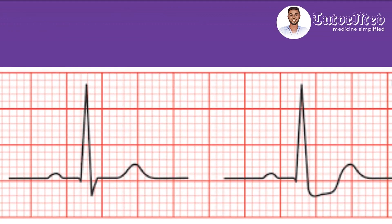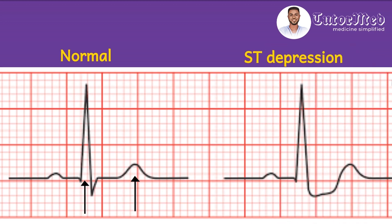Please pause here, like and share our video, and subscribe to our channel if you have not done so yet. Now let's look at a hypothetical ECG demonstration. On the normal ECG tracing, notice that the T wave is concordant with the net direction of the QRS complex — the QRS complex is in the positive direction and the T wave is also in the positive direction. The normal T wave should follow the QRS complex and should be asymmetrical in contour. On the ST depression ECG tracing, notice how the segment is two millimeters below the baseline, even with a concordant T wave — meaning you don't need an inverted T wave to diagnose subendocardial ischemia.